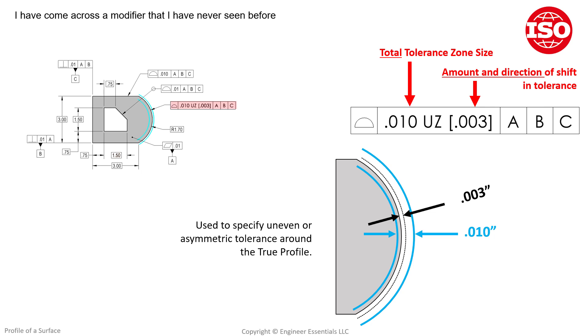like this. We saw a profile with some value, and then UZ, and then following that was brackets with a value inside those brackets. Now we can have datums or not have datums after that—it just depends on the initial intent or control of that profile. But the focus of this video is going to be talking about this UZ modifier.